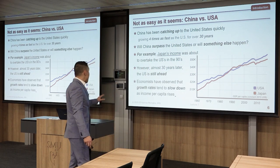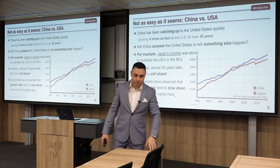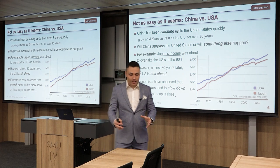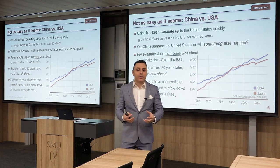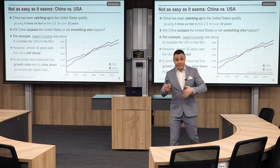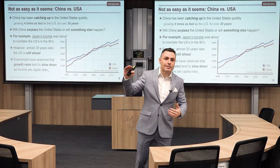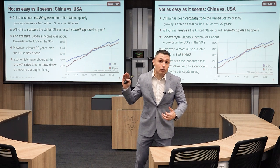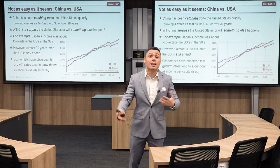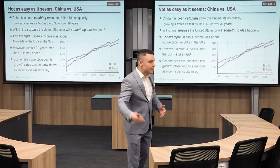Economists have observed that growth rates tend to slow down as income per capita rises. It seems as if there is something like a potential for an economy — as the economy approaches its full potential, it slows down and smoothly reaches that potential and stays there. Economists call this point the steady state. We will see the model that shows this in a couple of lectures.